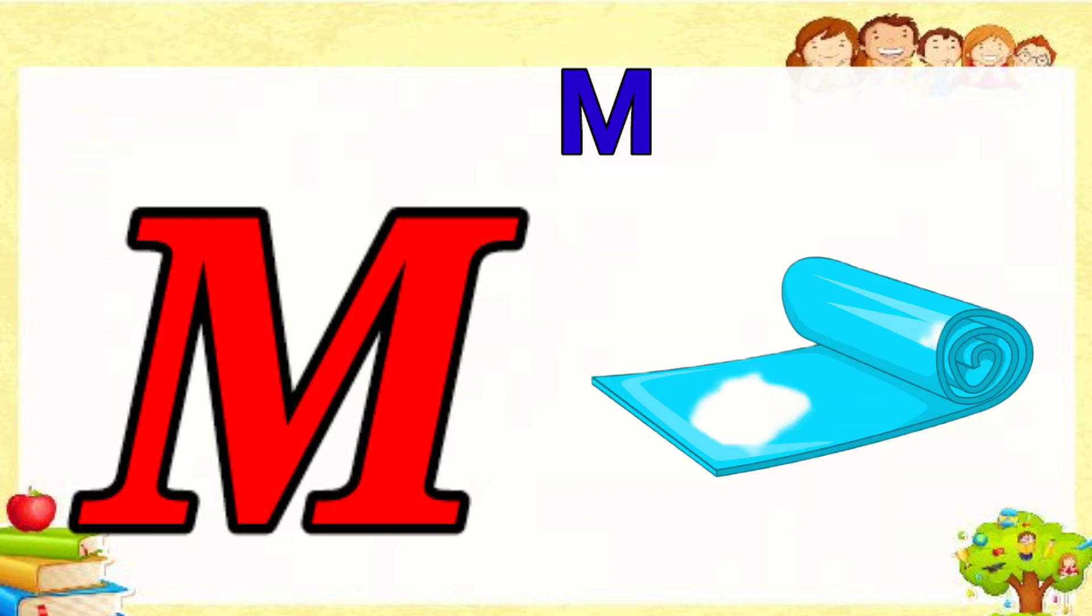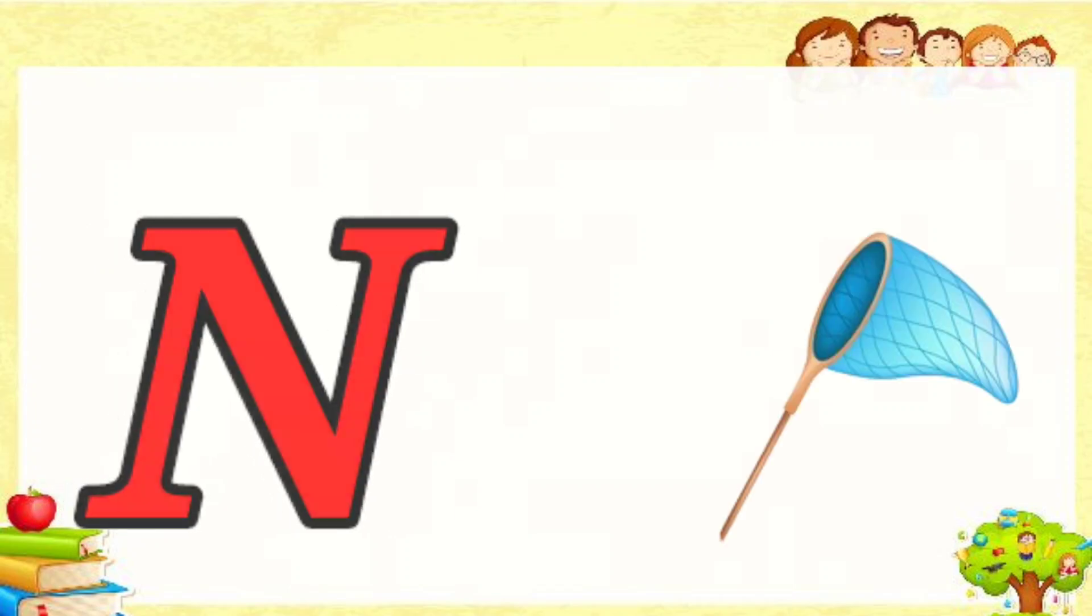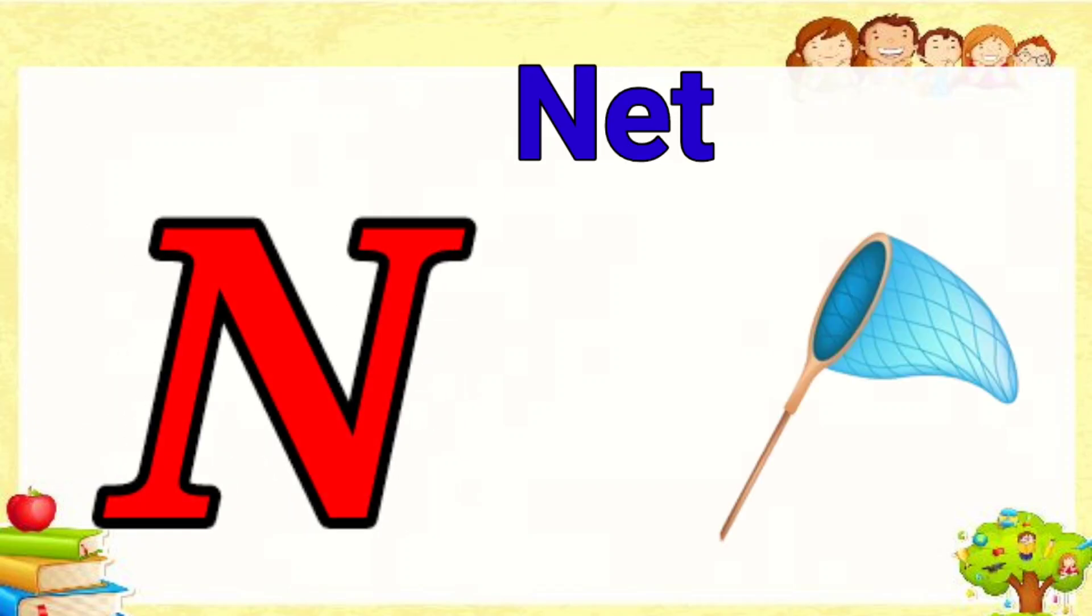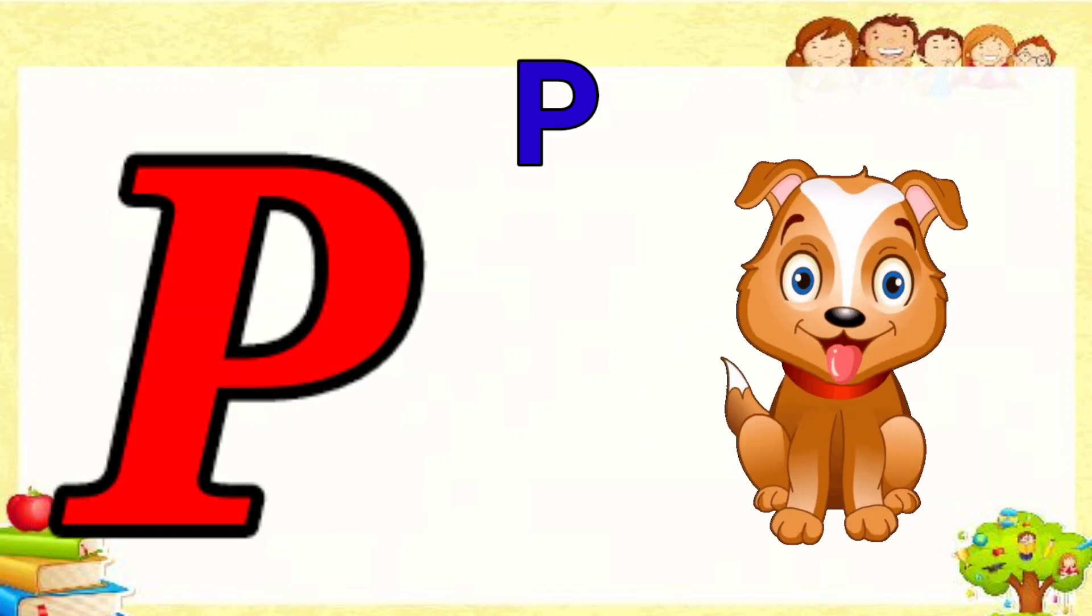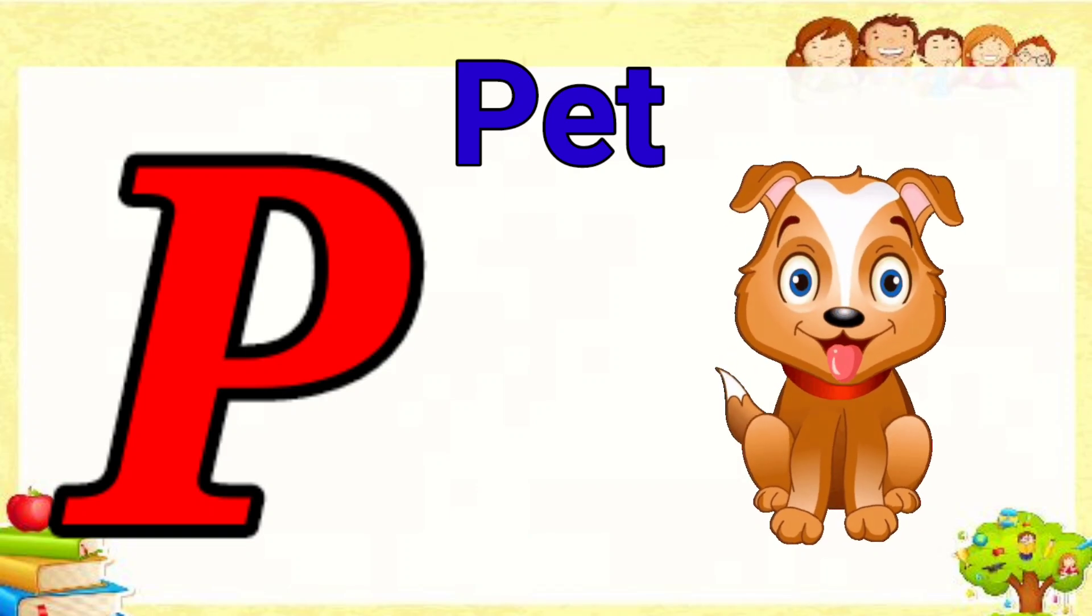M is for mat, m-m-mat. N is for net, n-n-net. O is for orange, o-o-orange. P is for pet, p-p-pet.